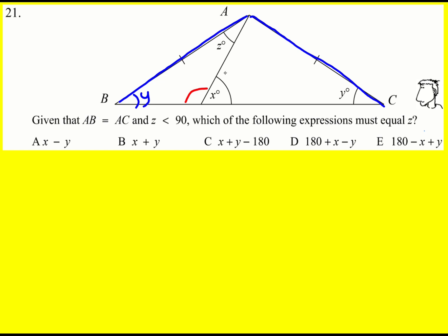Angles on a straight line add up to 180, so this angle in red must be 180 minus X. If it was 30, you'd say it was 150. We have to work generally.